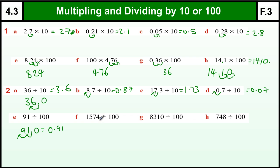Dividing by 100 here, the decimal point is going from here in two places to get 15.74. The decimal point that's here is going one, two places to get 83.10. So 83.1, but we again don't write the 0. Again we don't write the 0. One, two places to get 7.48.